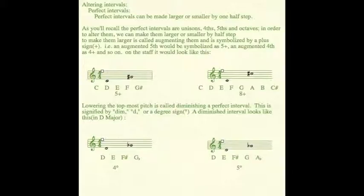And then the fifth would be a D to A. And to make it a diminished fifth, we need to make the A an A flat. And that would sound like this.